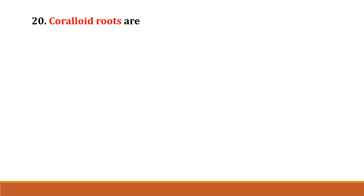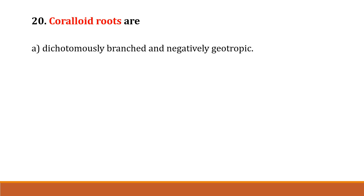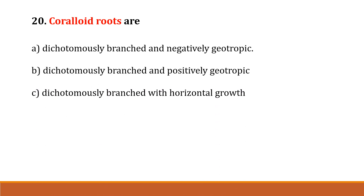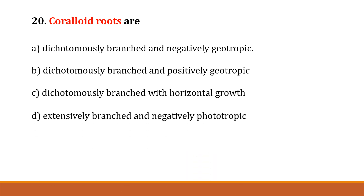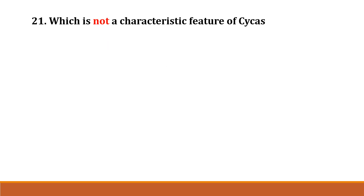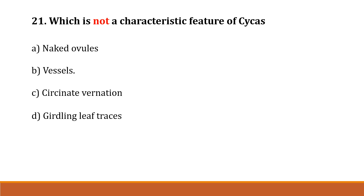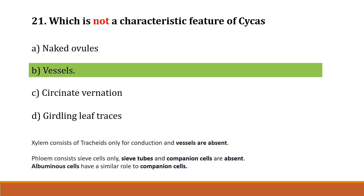Question number 20: Coraloid roots are Option A: dichotomously branched and negatively geotropic, Option B: dichotomously branched and positively geotropic, Option C: dichotomously branched and horizontal growth, Option D: extensively branched and negatively phototropic. The correct answer is Option A, dichotomously branched and negatively geotropic. Question number 21: Which is not a characteristic feature of Cycas? Option A: naked ovules, Option B: vessels, Option C: circinate venation, Option D: girding leaf traces. The correct answer is Option B, vessels. In gymnosperms, the xylem contains tracheids; vessels are absent in gymnosperms. Phloem consists of albuminous cells; sieve tubes and companion cells are absent in gymnosperms.